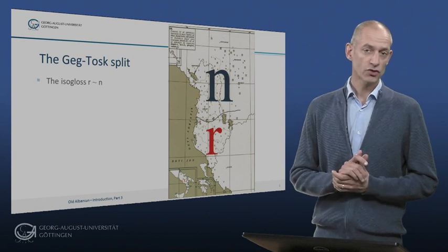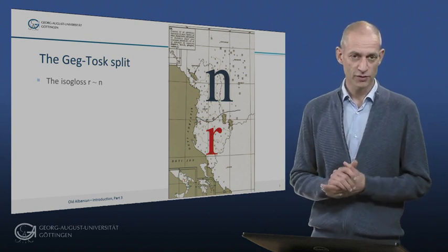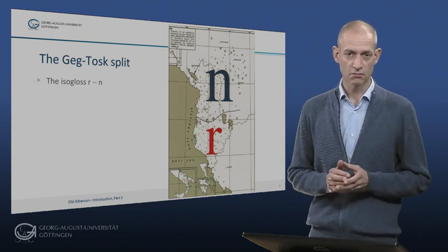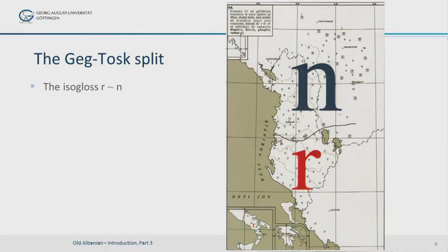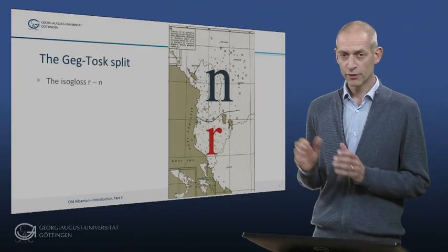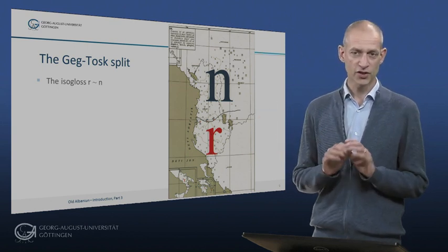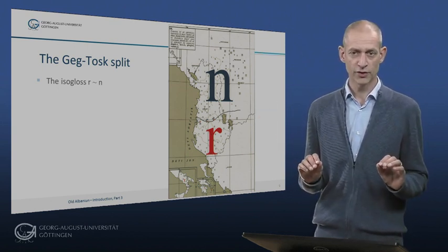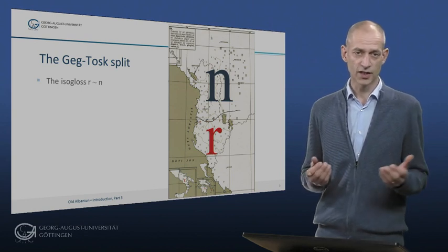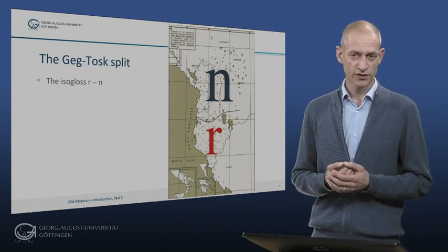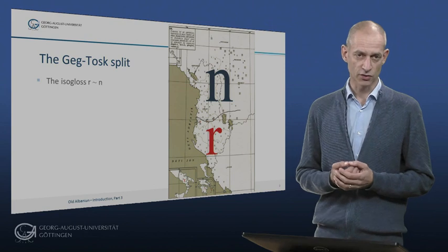This map shows the geographic extent of the rhoticism of N to R in southern Albanian. As you can see, the isogloss follows the river Skumbin quite closely. The diaspora dialects in Greece and Italy all show rhoticism too. It's very rare to find a map like this one that has such a clear-cut division between two variants, which is why it is taken as the basic criterion for the distinction between GEG and TOSC.